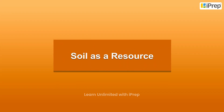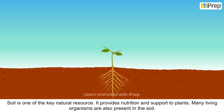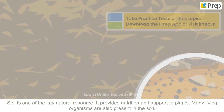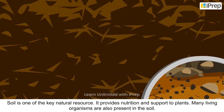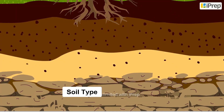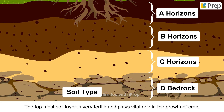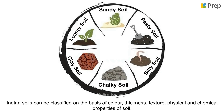Soil is one of the key natural resources. It provides nutrition and support to plants, and many living organisms are also present in the soil. The soil profile has four vertical horizons. The topmost soil layer is very fertile and plays a vital role in the growth of crops.